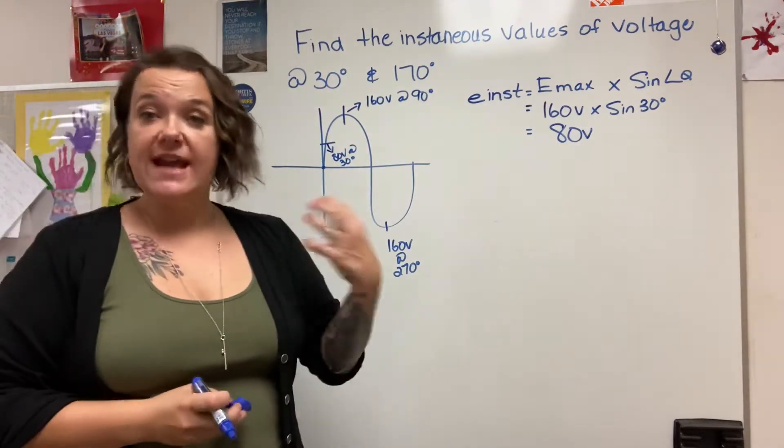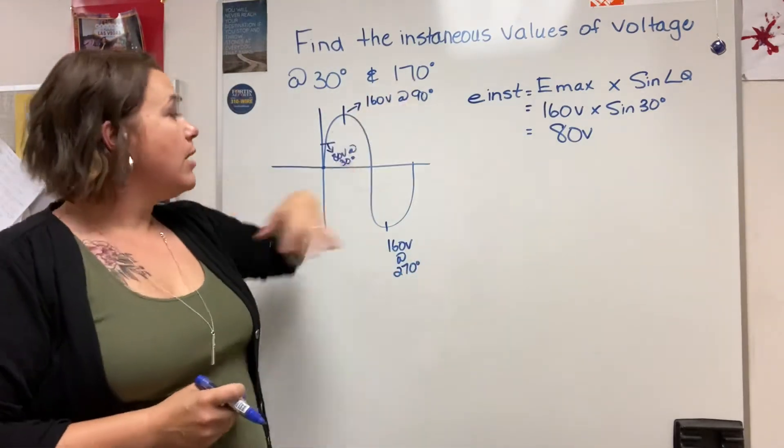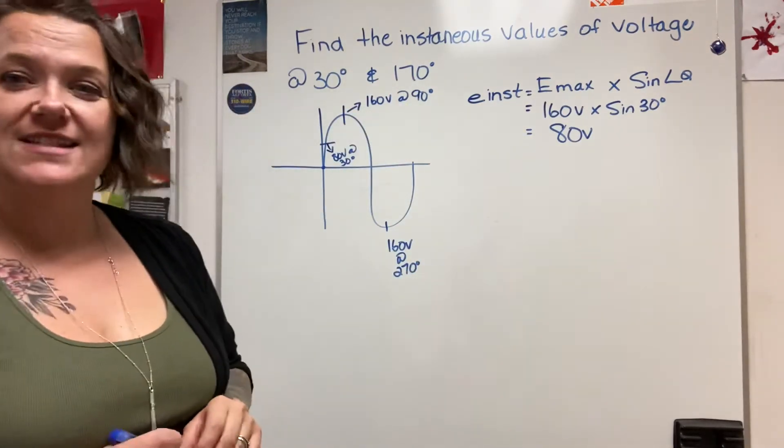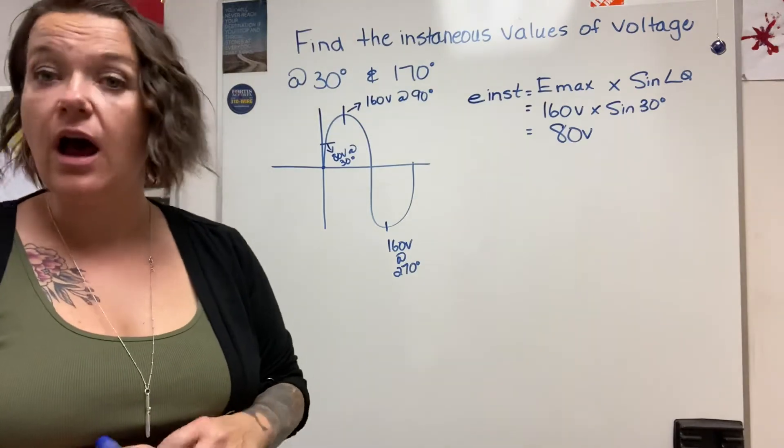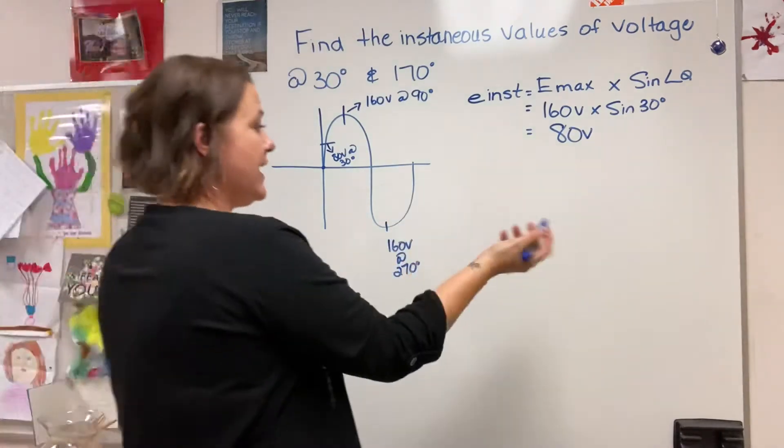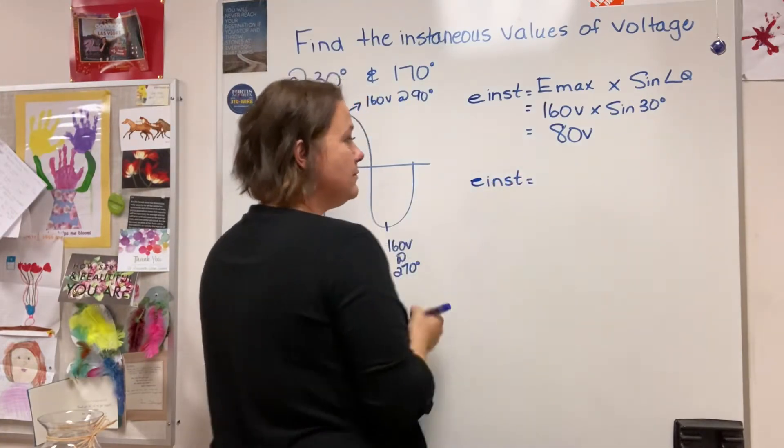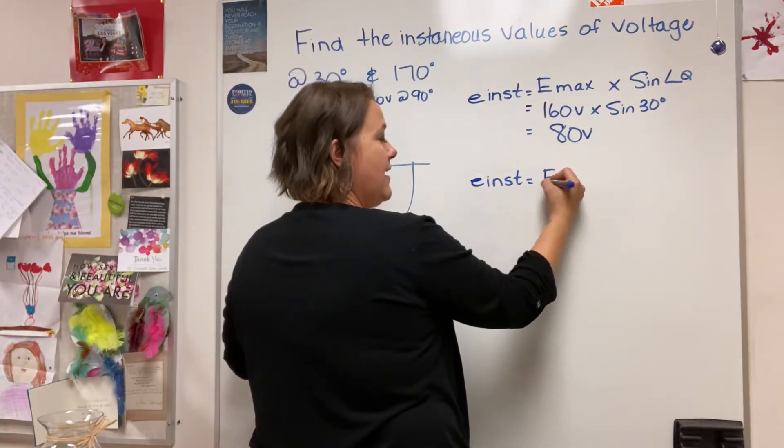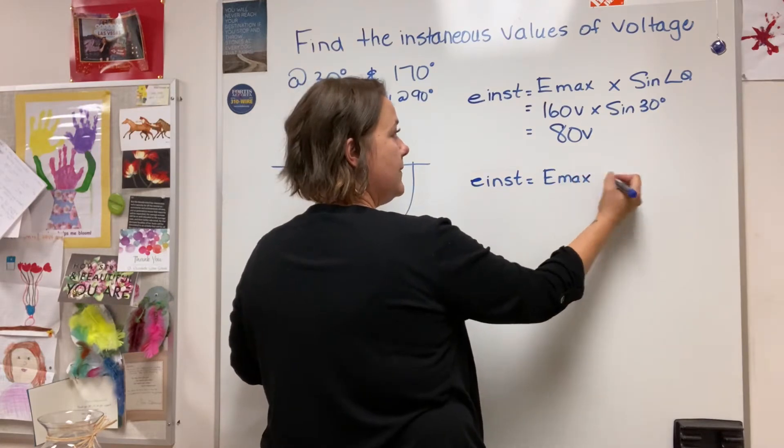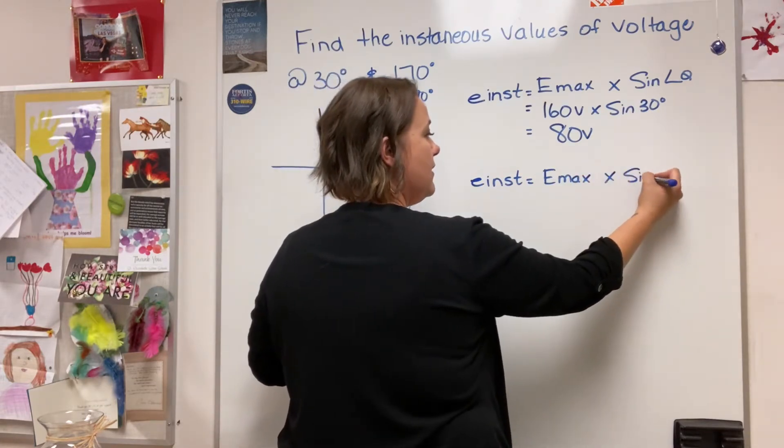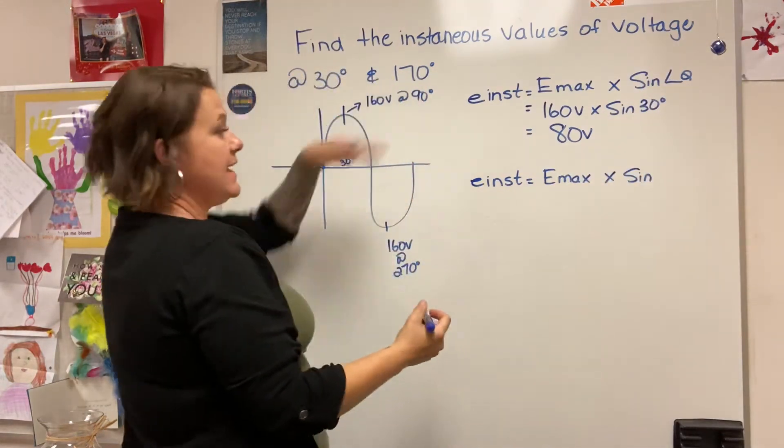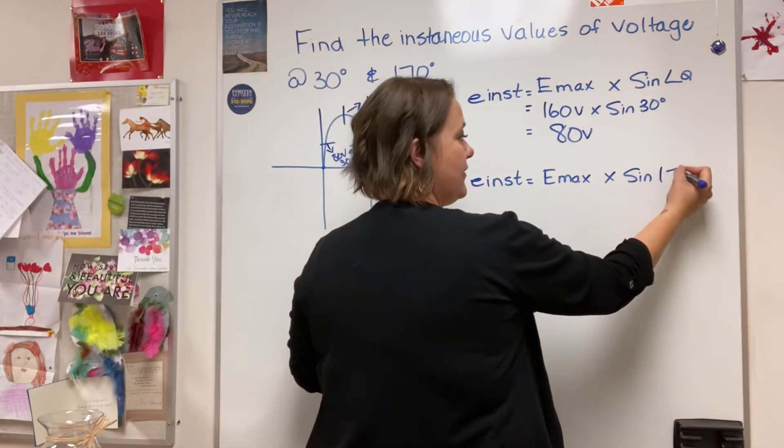The next problem or voltage that we're looking to find is the instantaneous value of voltage at 170 degrees. Again, our e instantaneous is the value that we're looking for is your e max times the sine of the angle, and in this case it's going to be 170 degrees.